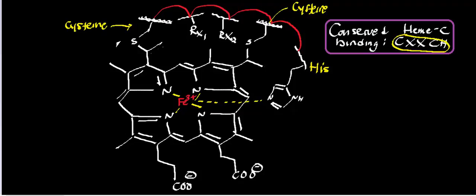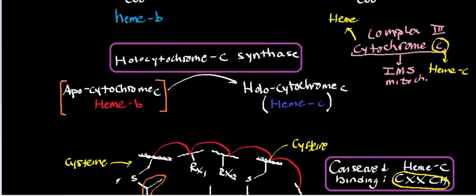Notice that we had these vinyl groups on the heme, and a cysteine residue from cytochrome C is now added onto these vinyl groups — the same occurs for the other vinyl group. This is not a spontaneous reaction; it requires an enzyme. The enzyme that attaches the cysteine residues of cytochrome C onto the heme is called hollow cytochrome C synthase.